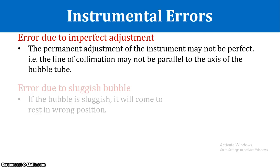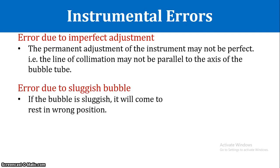The next instrumental error is due to a sluggish bubble. If the bubble in the level tube is sluggish and not responding correctly, the instrument cannot be properly leveled, which causes errors in readings.